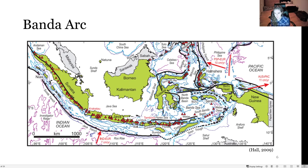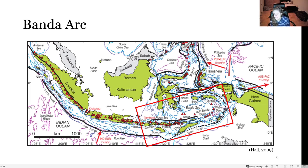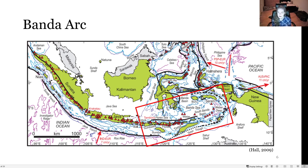Beginning with the Banda Arc — the first thing you notice is its extreme curve. Around Beru and Seram it almost makes a 180-degree turn all the way down to Timor. One question we'll seek to answer is how this curve came about. The second thing you notice is that there are basins in the center of that loop — the North Banda Basin and the South Banda Basin — which are tensional features. We want to understand why there are extensional features in what should be a compressive subduction zone.